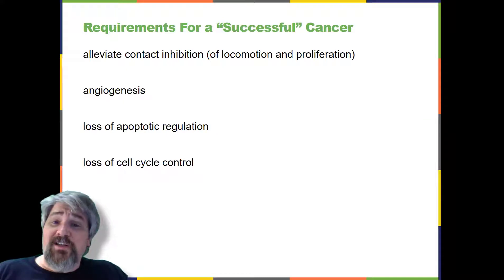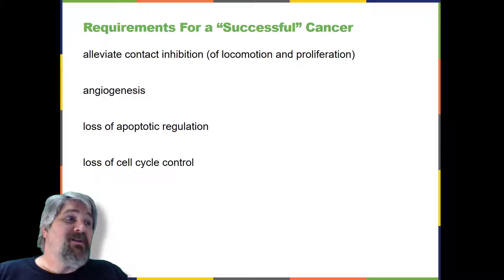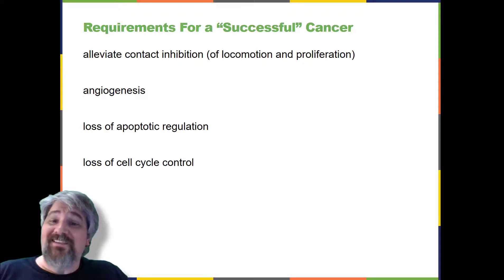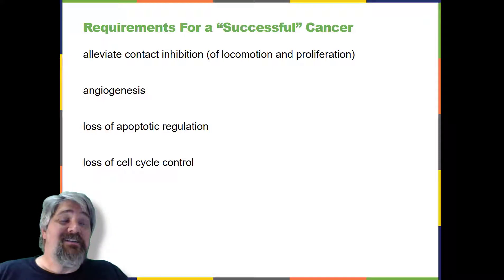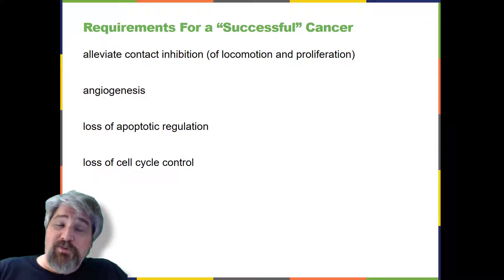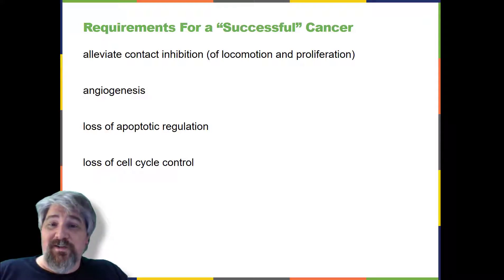Cancer is a collective name for many different diseases caused by a common mechanism: uncontrolled cell division. Despite the redundancy and overlapping levels of cell cycle control, errors occur. One of the critical processes monitored by the cell cycle checkpoint surveillance mechanism is the proper replication of DNA during the S phase. Even when all of these cell cycle controls are fully functional, a small percentage of replication errors — mutations — will be passed on to the daughter cells.